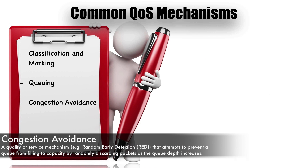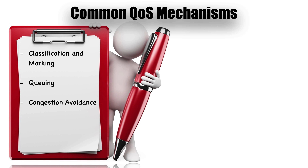Another mechanism is congestion avoidance. When a queue becomes completely congested, there are ugly side effects — not only do we start discarding traffic, but TCP traffic actually slows down. Remember the TCP window size? The window size gets reduced because TCP concludes it's sending too aggressively and backs off. To avoid congestion, there is an industry standard approach called RED — random early detection. Cisco also has their own variant called WRED — weighted random early detection.